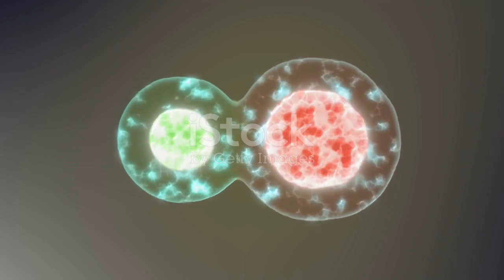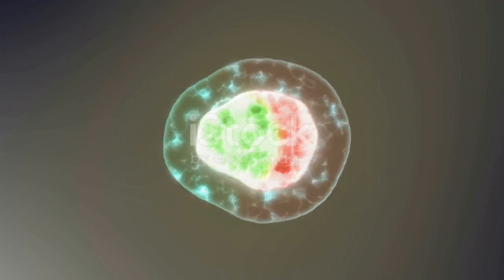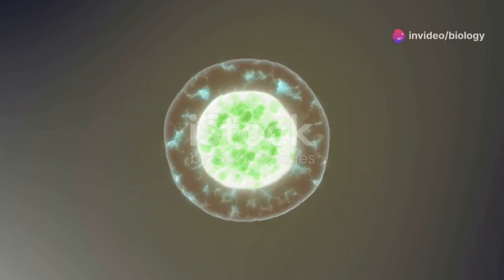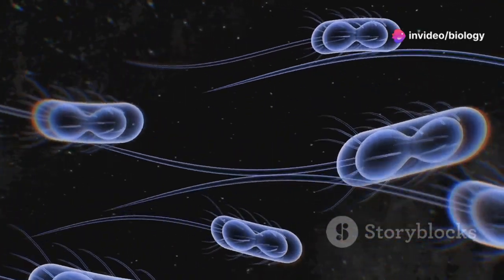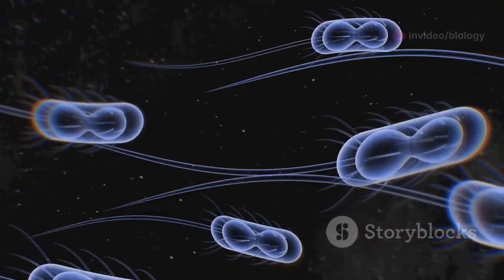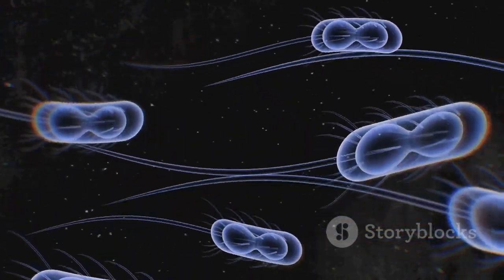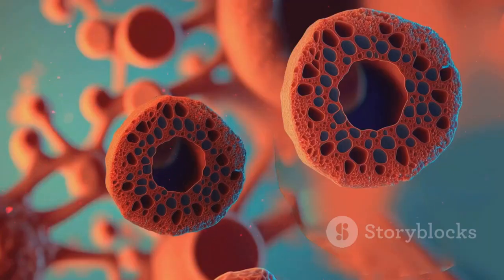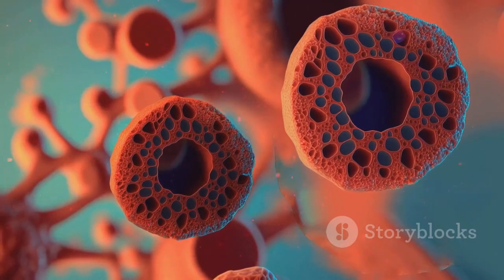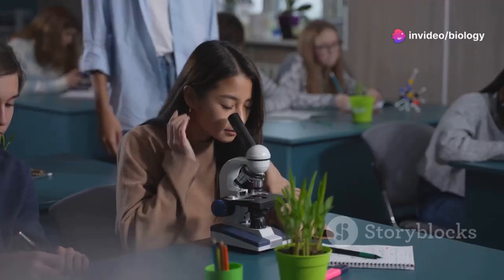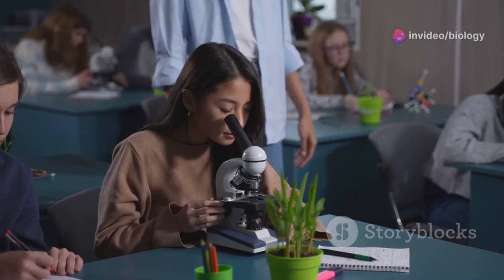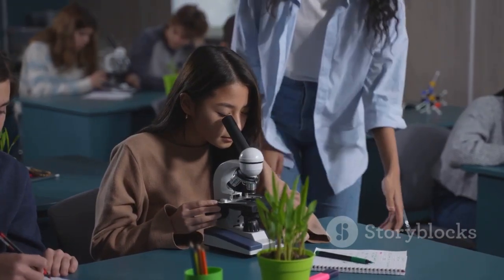All right, time for a quick comparison. Prokaryotic cells are like the minimalist campers of the cell world - small, simple, and efficient. Eukaryotic cells, on the other hand, are like the luxury RVs - spacious, complex, and packed with amenities. Remember, NEET loves to test your understanding of the differences between these two cell types, so make sure you can compare and contrast their structures like a pro.